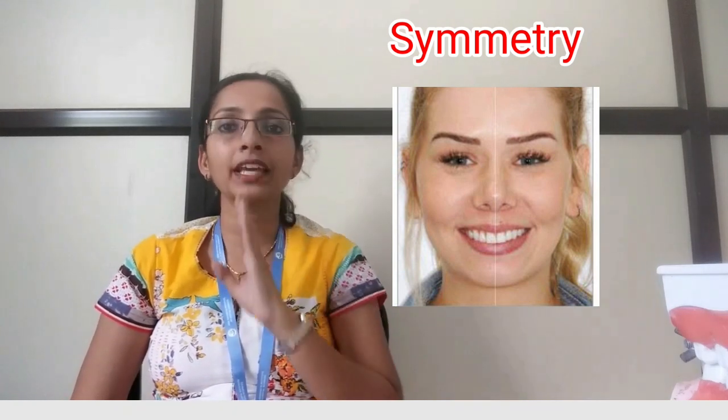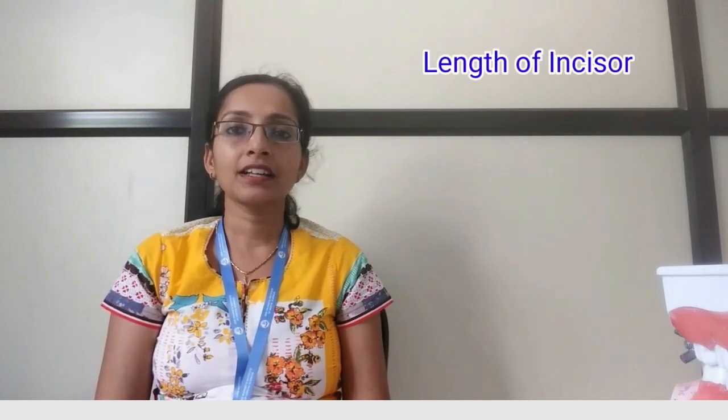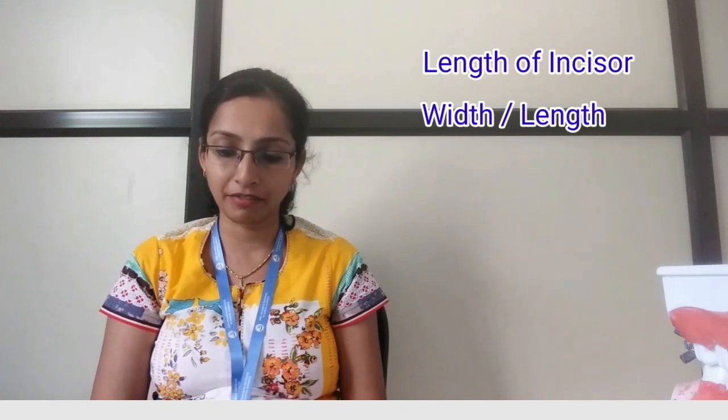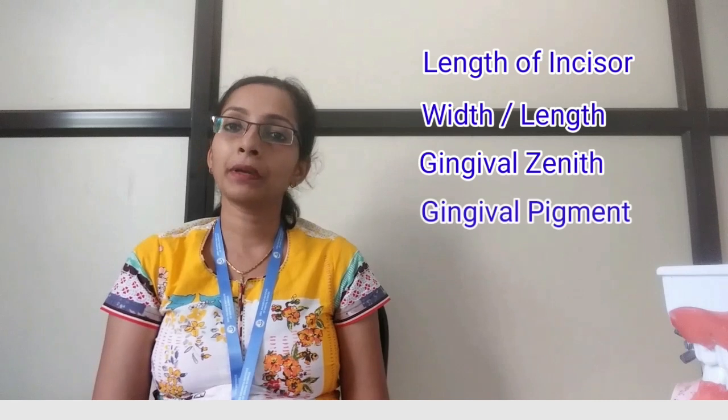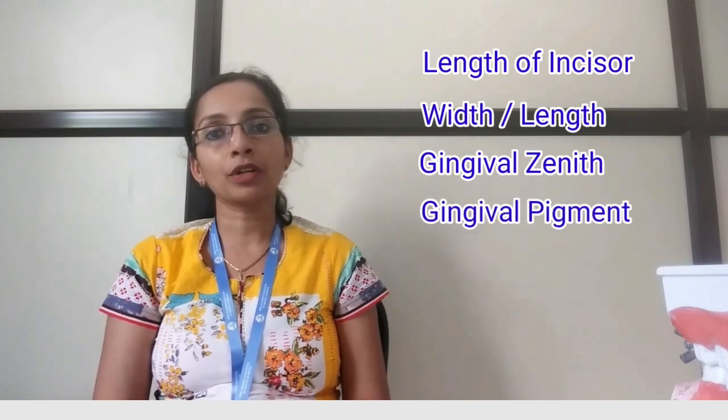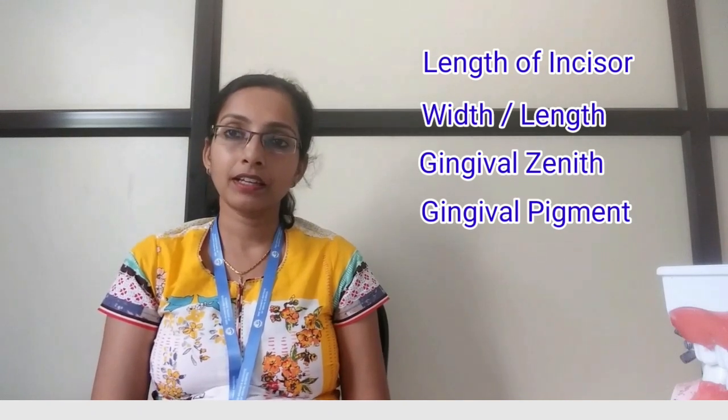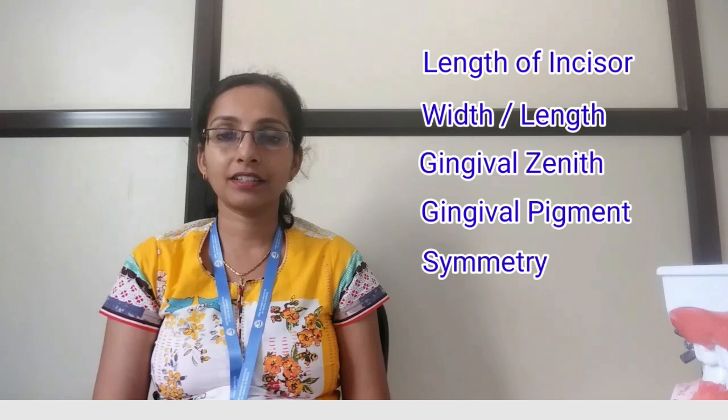Let's quickly revise the elements of the aesthetic zone: the ideal length of the central incisors is around 10 mm and the lateral incisors about 7.5 to 8 mm. The width-to-length ratio should be 0.78 to 0.85. The gingival zenith of the central and canine should be in the same line, with the lateral 1 mm below. Gingival pigment should be coral pink or orange-pink, and there should be symmetry with the midline.